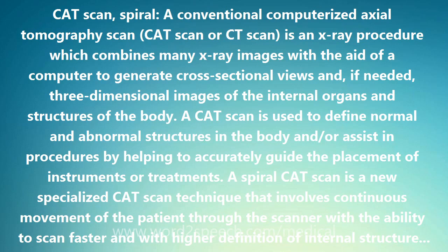A spiral CAT scan is a new specialized CAT scan technique that involves continuous movement of the patient through the scanner, with the ability to scan faster and with higher definition of internal structures. Spiral CAT scanning can permit greater visualization of blood vessels and internal tissues, such as those within the chest cavity.